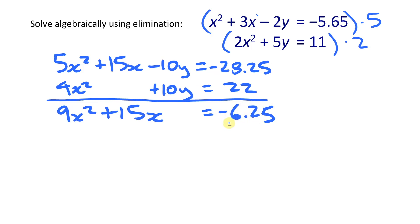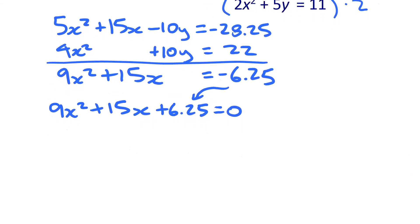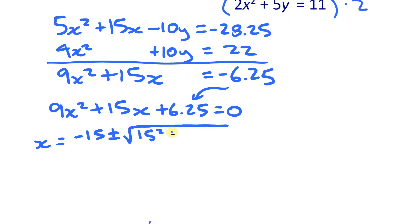To solve 9x² + 15x + 6.25 = 0, I could try factoring or use the quadratic formula. Using the quadratic formula: x = (−15 ± √(15² − 4·9·6.25)) / (2·9).